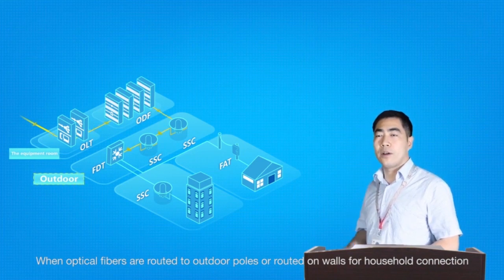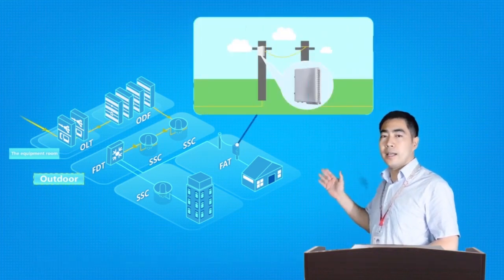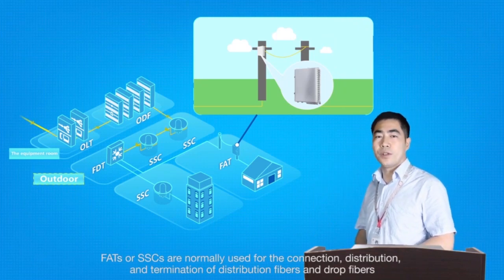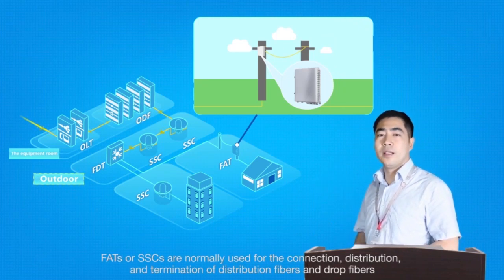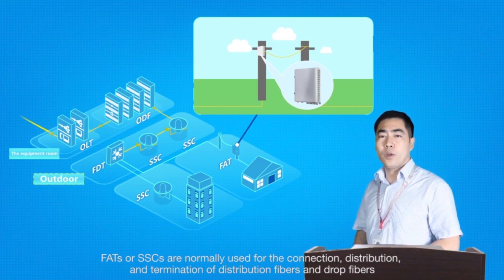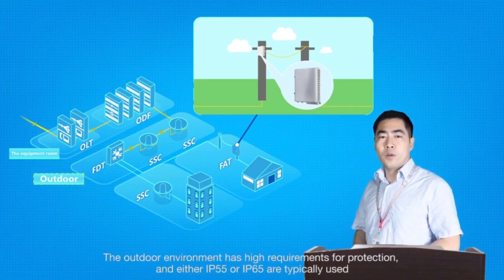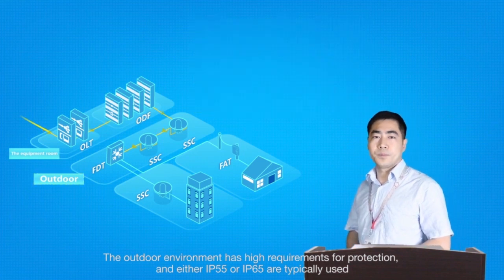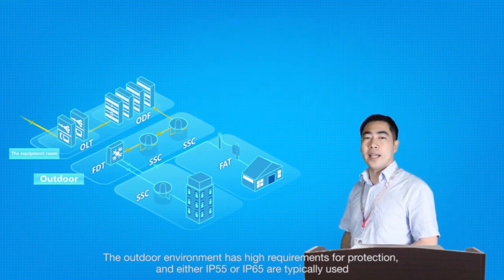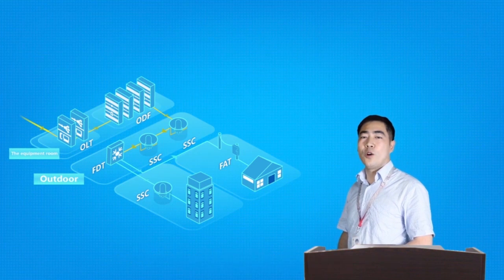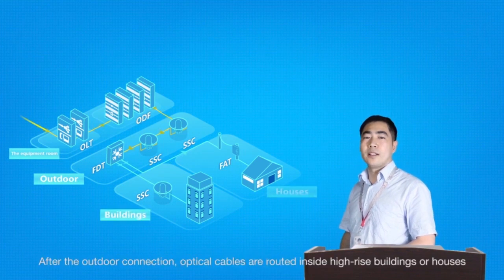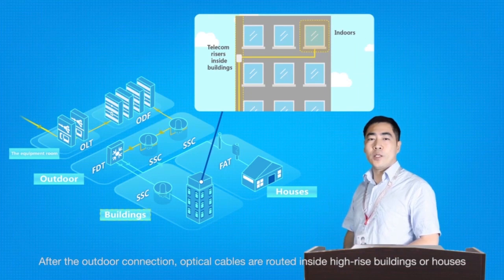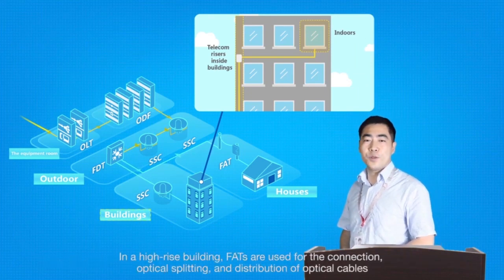When optical fibers are routed to outdoor poles or routed on walls for household connection, FATs or SSCs are normally used for the connection, distribution, and termination of distribution fibers and drop fibers. The outdoor environment has high requirements for protection, and either IP55 or IP65 are typically used.